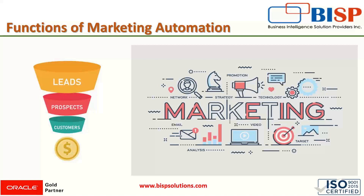The first and foremost function of marketing automation is it collects data about the potential customer through website visits, app usage, email clicks, and other digital marketing interactions. Then, based on that data that has been collected, relevant and useful content is created. After that, they identify, target, and segment the prospect customer.